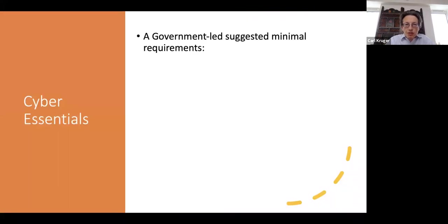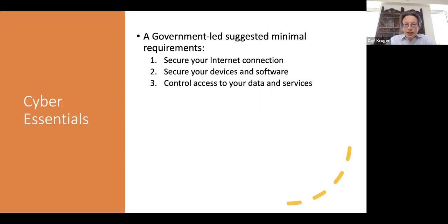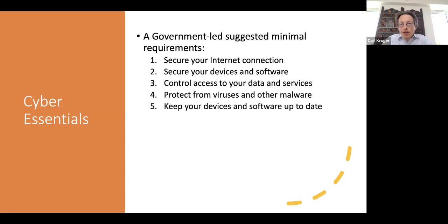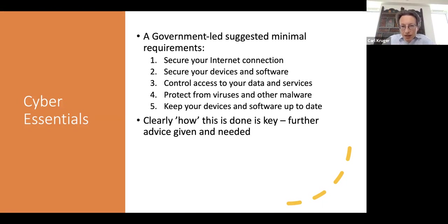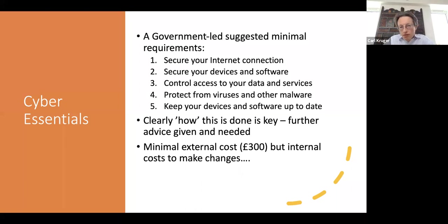Cyber Essentials is a government-backed scheme requiring you to do five things. If you've managed to do these five things, you are pretty much in charge — but the problem is it doesn't tell you how. The five areas include: securing your internet connection, securing your devices and software (some physical security — doors and locks — some password controls for virtual security), and controlling access to your data and services — which is a wide-ranging subject covering what your data is, where it is, and what justification you have for holding it.